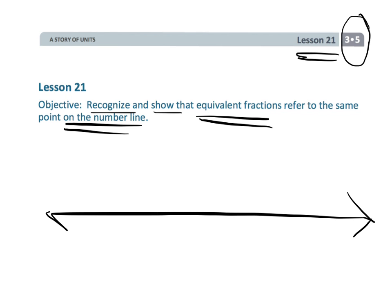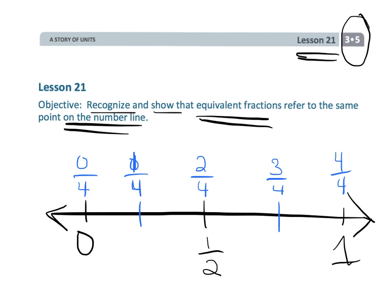A quick sample of that would be if you have 0 and you have 1 here, we could cut this in half, in which case we've got a half. But we could also cut each of those in halves to create quarters, in which case we'd have 0 fourth, 1 fourth, 2 fourths, 3 fourths, and 4 fourths. And so now students will recognize that 2 fourths and 1 half live in the same place on the number line, that means these two fractions are equivalent to each other.